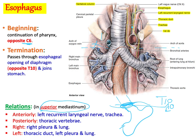Related to the esophagus on the right, you have the right lung and pleura. On the left you have the left lung, pleura, and the thoracic duct — a lymphatic duct that drains lymph from the abdominal region up to the junction between the internal jugular and subclavian vein. These are the relations of the esophagus in the superior mediastinum.